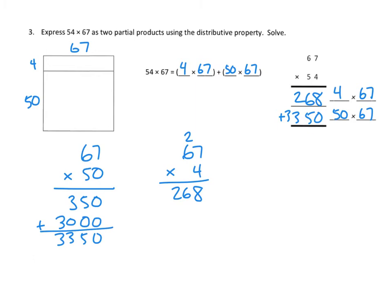Once I've got that, I can add my two partial products together. 8 plus 0 is 8. Then in the tens: 6 plus 5 is 11, so put the 1 and carry 1. Then 200 plus 300 plus that extra 100 is 600. And finally, 3,000. That ends up being our answer: 3,618. That's how we use the area model to show the distributive property expressed this way.